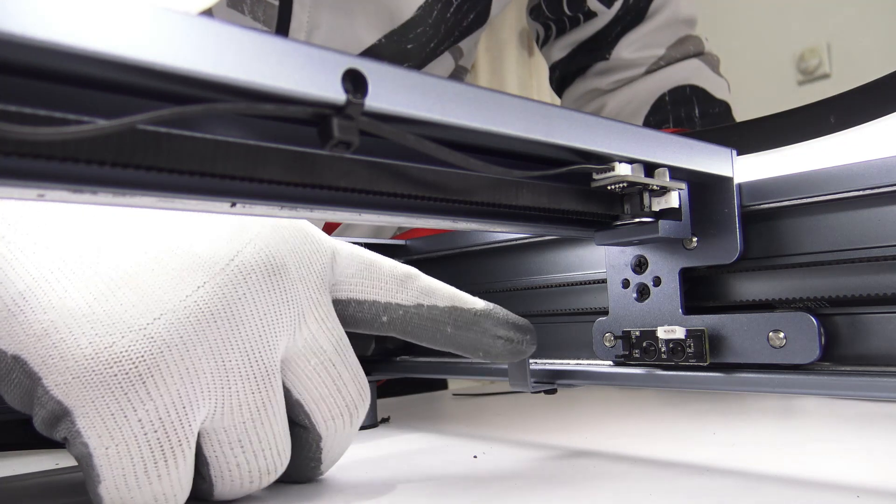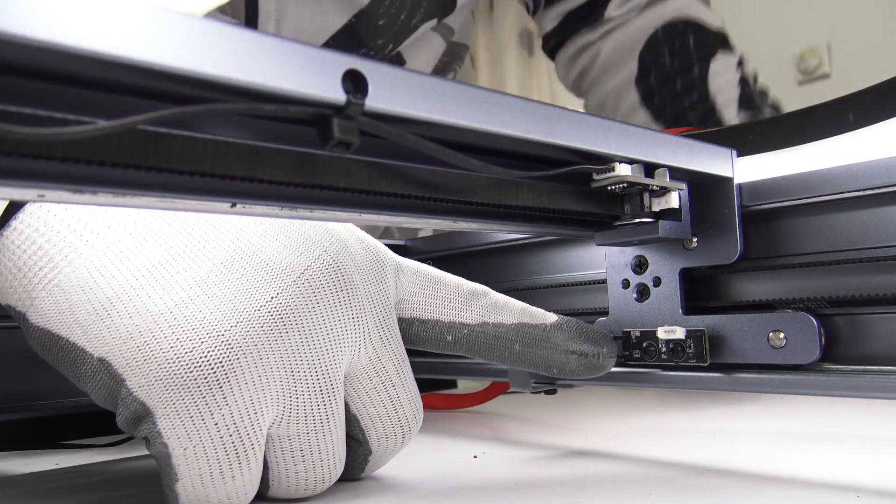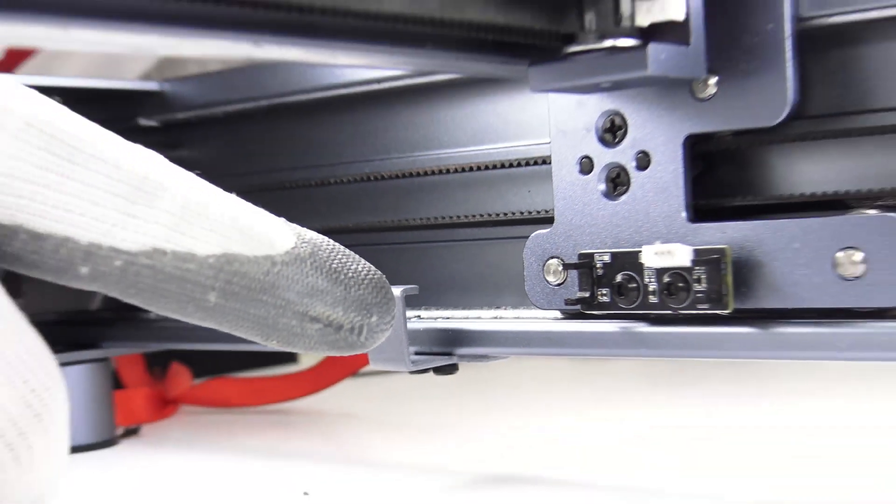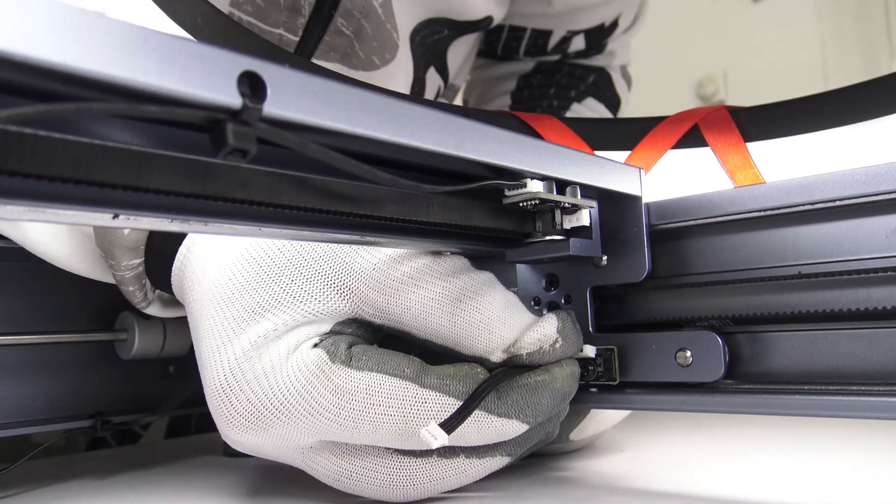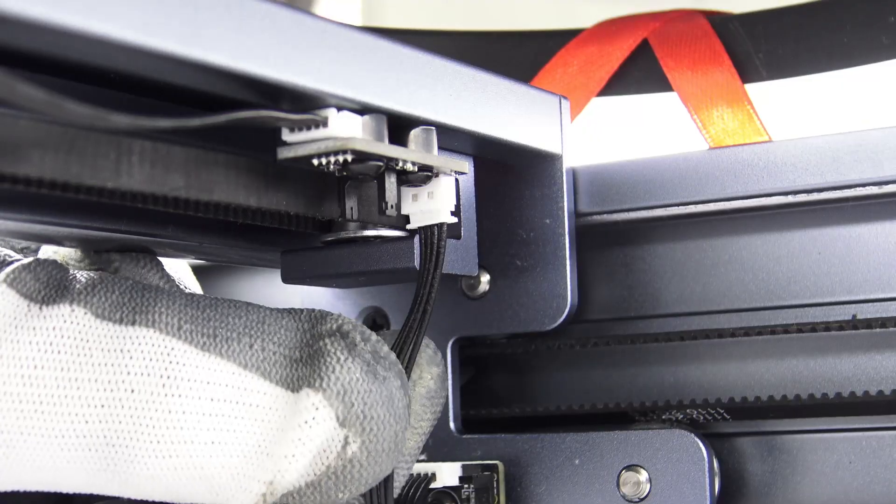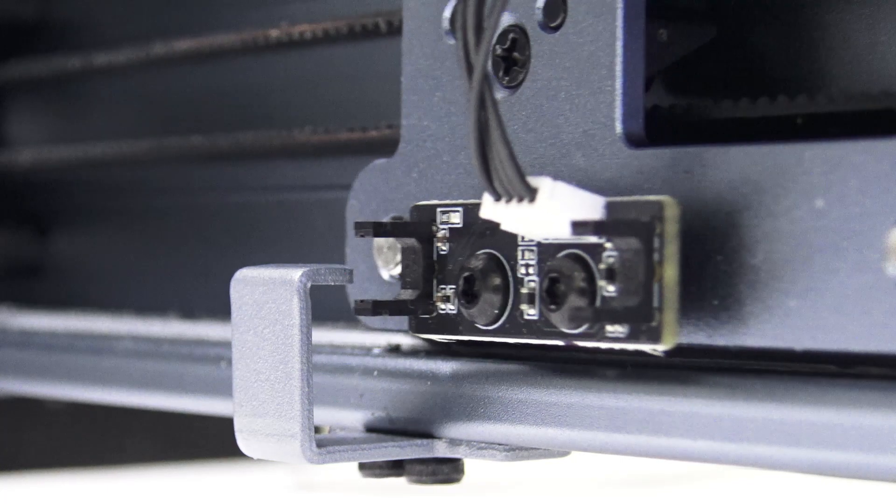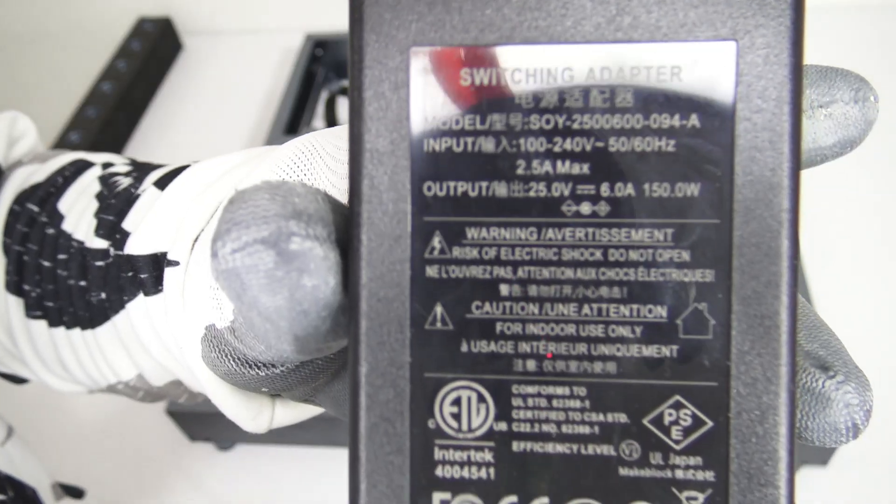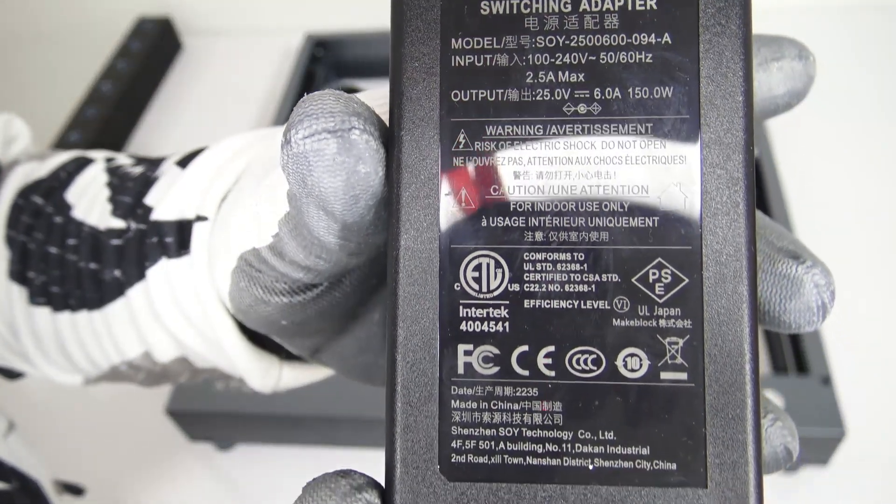These are limit switches on each axis which makes it possible to set the home position of the machine automatically. They also prevent the machine from hitting the physical limit and putting strain on the components. With the machine, you also get a 2.5 ampere 150 watt charger.